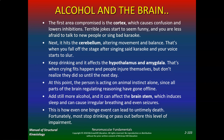If you still add more alcohol — five to six drinks an hour — it can affect the brainstem, which induces sleep and can cause irregular breathing and even seizures. This is how even one binge event can lead to an untimely death. Unfortunately most people pass out before it really gets to this level. Now you understand the mechanism: alcohol takes the brain down from the cortex to the cerebellum, to the hypothalamus, to the brainstem.